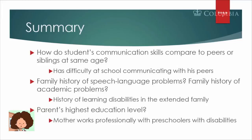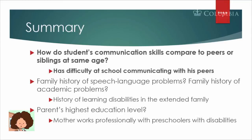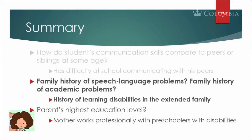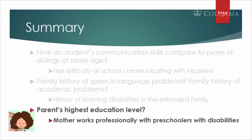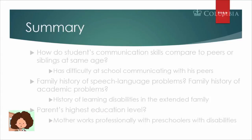We have gathered some telling information from the first six critical questions. Most notably, Alex has difficulty at school communicating with his peers, although he is comfortable speaking with his mom. We learned that there is a history of learning disabilities in the extended family, so there may be a genetic component. However, his mother is a great strength for him because of her professional experience working with preschoolers with disabilities, and because she and his father surround him with a rich learning environment at home. We continue to gather data from the parent interview in the next module.